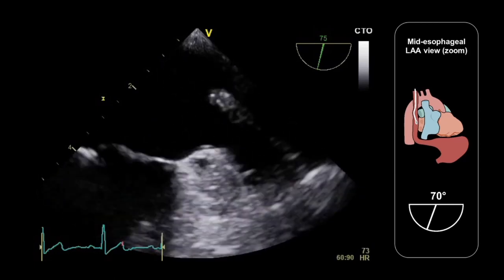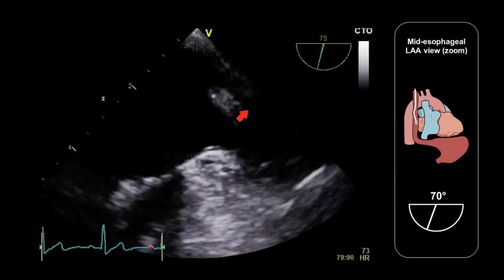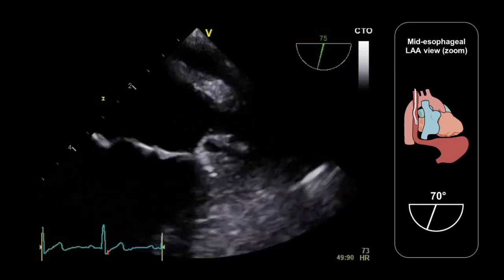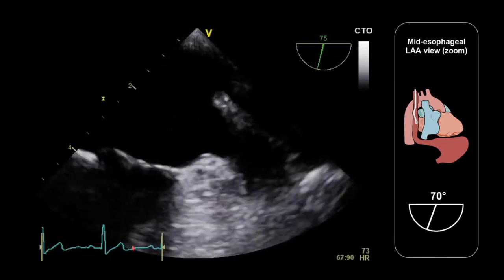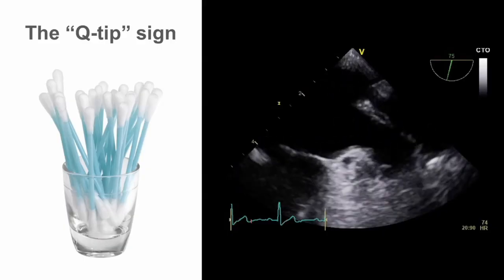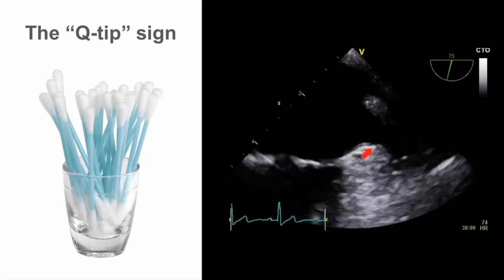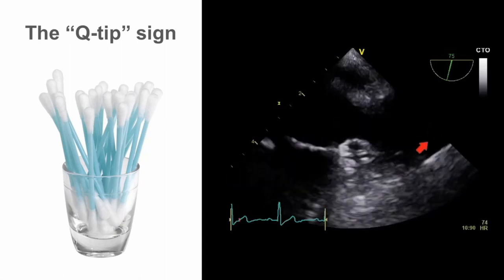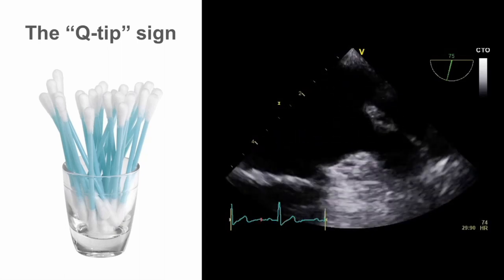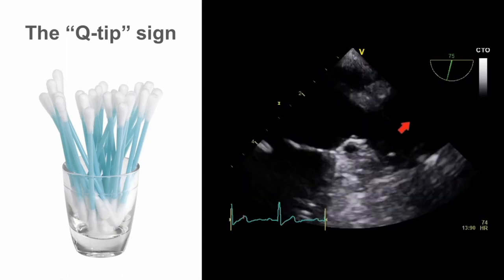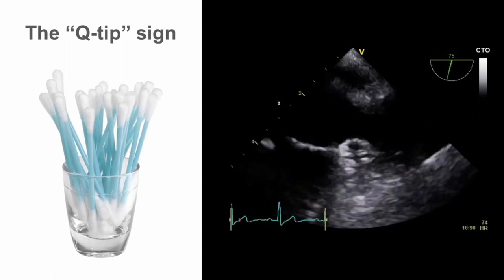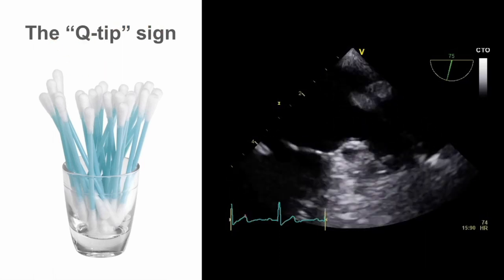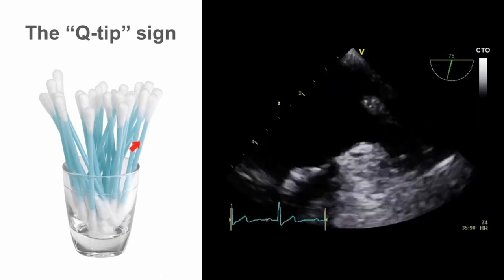We can adjust the depth of the imaging sector to really maximize the size of the left atrial appendage on screen to ensure thorough inspection. When we really zoom in, we can appreciate not just the anatomy of the appendage but also the postero-lateral ridge, and we can see that the ridge itself has a rather bulbous end — this has given it the common nickname of the Q-tip sign, because the postero-lateral ridge looks a little like the end of a Q-tip.